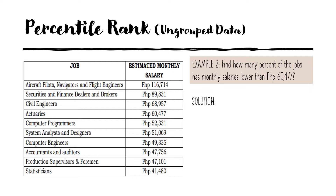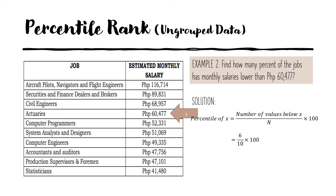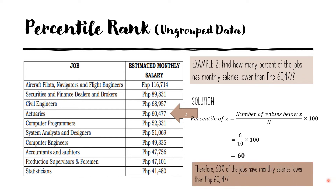For example number two, find how many percent of the jobs have monthly salaries lower than 60,477. The job with this estimated monthly salary falls under actuaries. Applying the formula again — number of values below x over n times 100 — we have six values below x, over 10 total data, times 100, giving us 60. Therefore, 60% of the jobs have monthly salaries lower than 60,477.